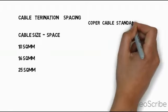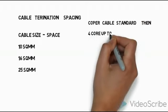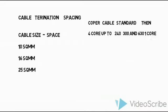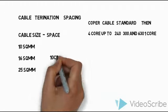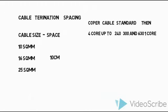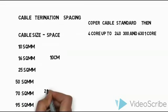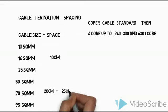The Cable Termination of Spacing has cable sizes: 10, 16, 25, 50, 70, 95 square mm. The minimum is 20 to 25 square mm.